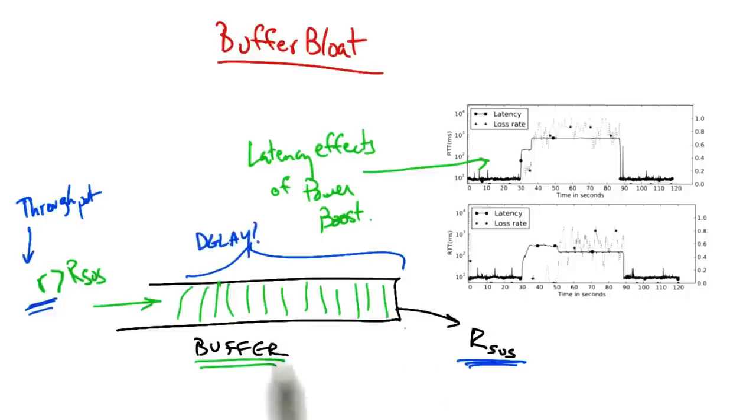As these packets are waiting in this buffer, they'll see higher delays than they would if they simply arrived at the front of the queue and could be sent immediately.